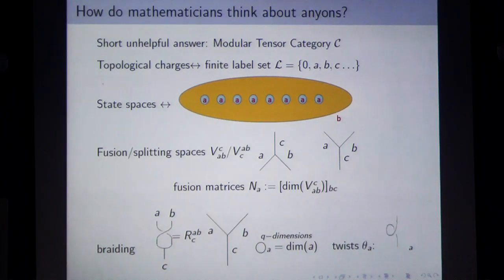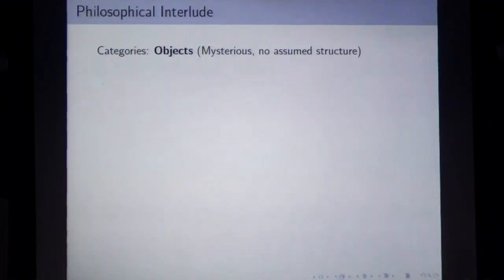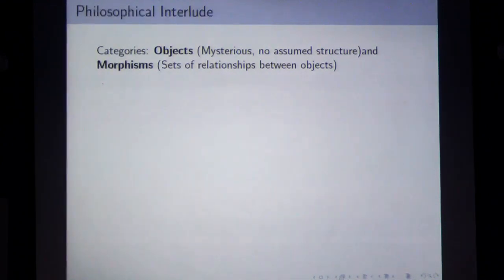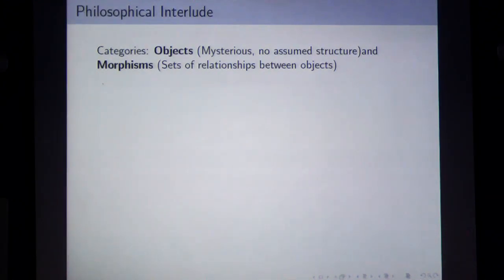Why do we think about anyons in terms of categories? In a category, you have two important things: objects — mysterious things with no assumed structure — and morphisms, which are the relationships between objects. The space of morphisms between two objects forms a set; for me, it's actually a finite-dimensional vector space. Morphisms are where everything is happening; the objects are mysterious things we can probe using morphisms.